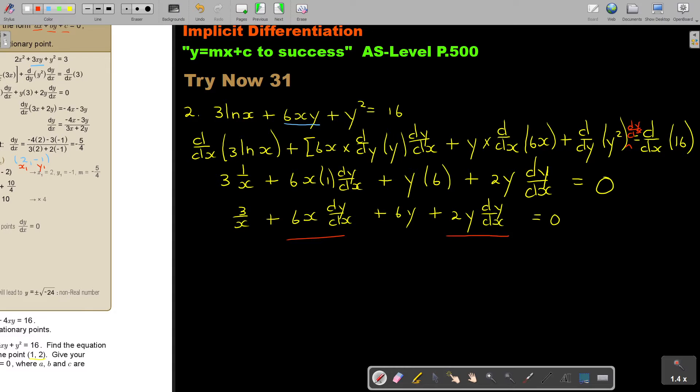So there is my dy/dx. I take out dy/dx, and this is going to be 6x plus 2y. If I take this over: negative 3 over x minus 6y. And then I divide.